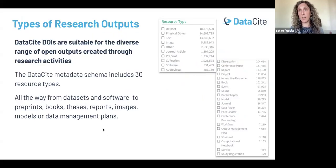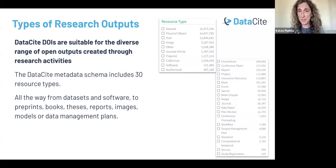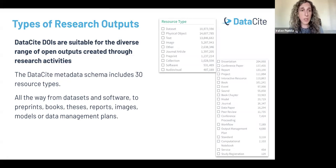Something I wanted to highlight is that Datasite covers a wide range of research outputs. We aim to provide services that capture the diversity of open outputs that researchers create through research activities. The Datasite metadata schema includes 30 resource types — we do include datasets, the focus of today's webinar, but we also cover many other research outputs: preprints, software, theses, dissertations, books, data management plans, study registrations, and many other outputs and resources.